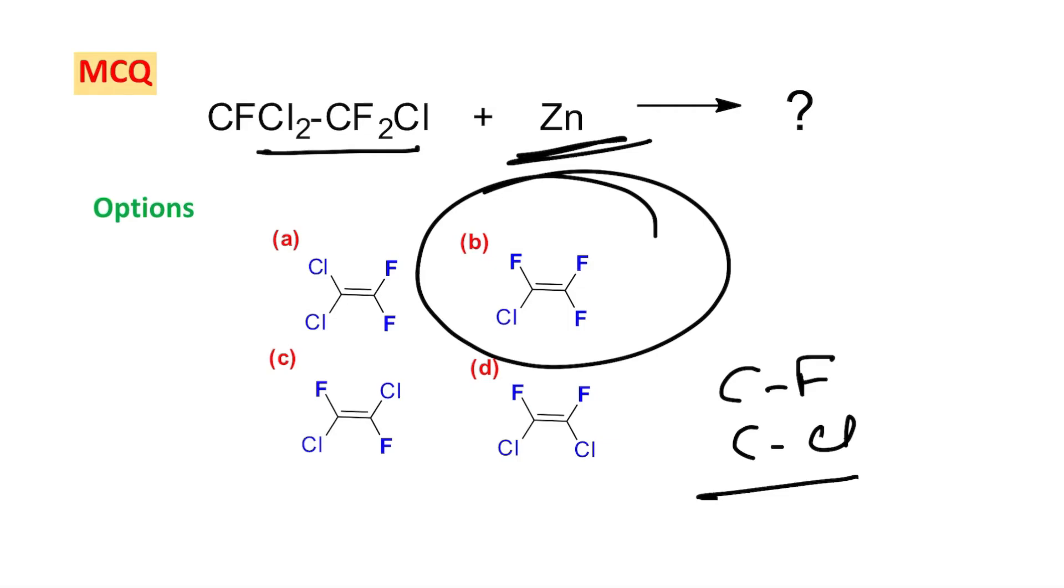Since chloride is a good leaving group, it will leave from both carbons, and both carbons bear chlorine. So it will produce alkene ultimately in which two Cl⁻ will be eliminated.